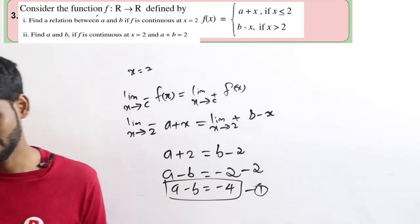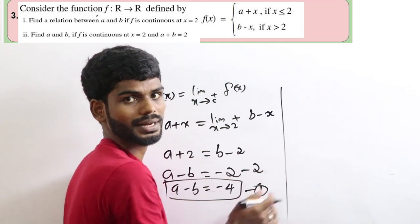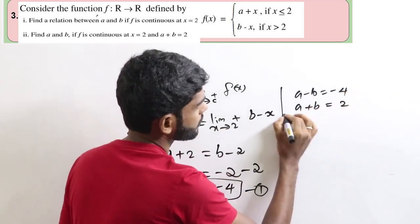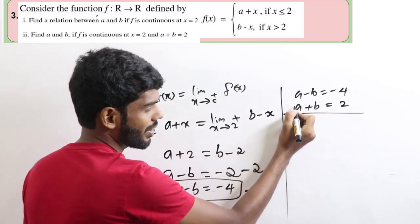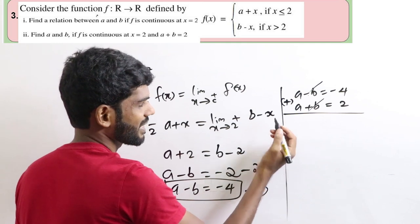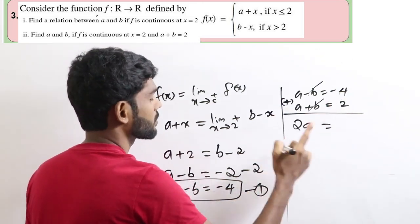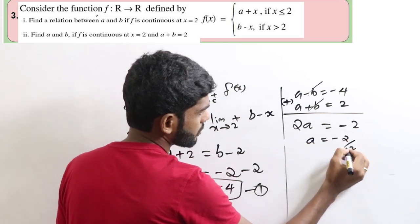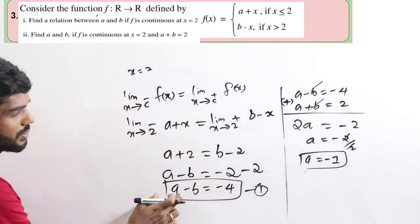For question 2, find a and b such that the function is continuous at x equal to 2, given also that a plus b equals 2. We now have the system: a minus b equals minus 4, and a plus b equals 2. Adding these equations to eliminate b: 2a equals minus 4 plus 2, so 2a equals minus 2, giving a equals minus 1.